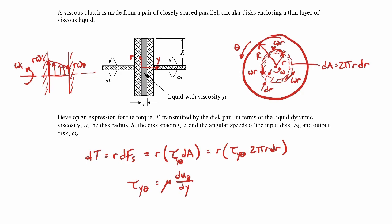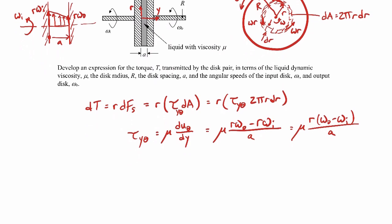The change in the tangential velocity will be just the difference between those two, so it'll be r omega o minus r omega i, all over the distance a as we go from here to here. This is going to be mu times r omega o minus omega i all over a.